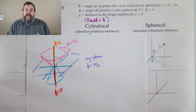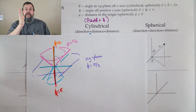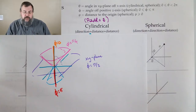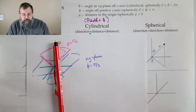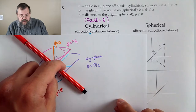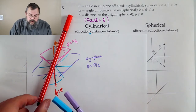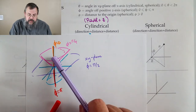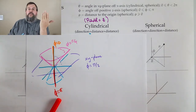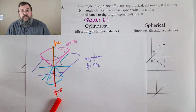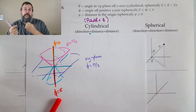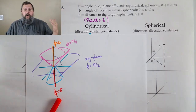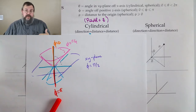You might ask why phi stops at pi and doesn't wrap around. The answer is: you don't need to. If you come to a certain direction and try to wrap around, that same phi angle is still formed — the only difference is that you've rotated in the theta direction. That rotation is accomplished by theta. So it's the combination of phi and theta that lets you achieve every possible direction in space. Phi only needs to go from zero to pi; theta only needs to go from zero to two pi.